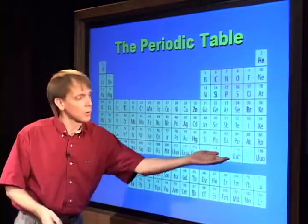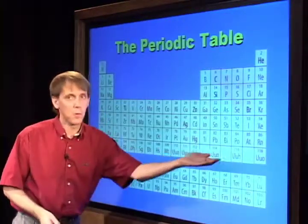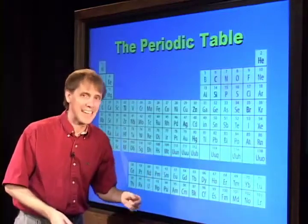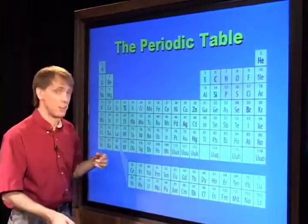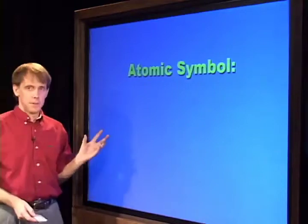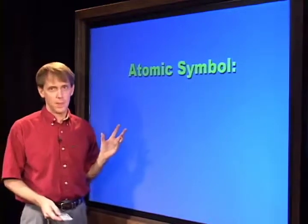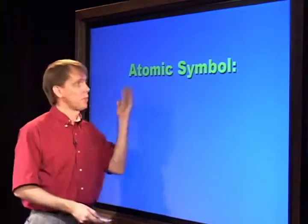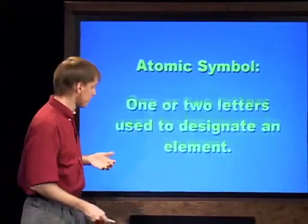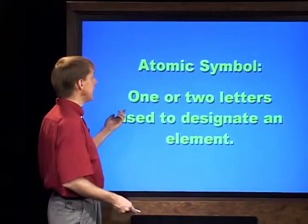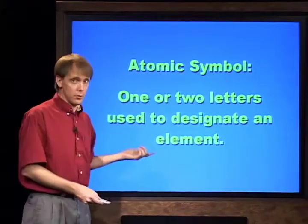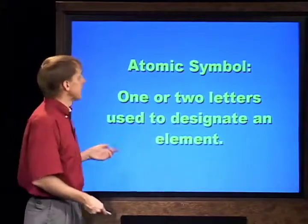The periodic table contains all the known elements, and we're still getting to know more — it goes up to about number 118. An element is designated by what we call the atomic symbol, which is merely the first one or two letters used to designate the element.